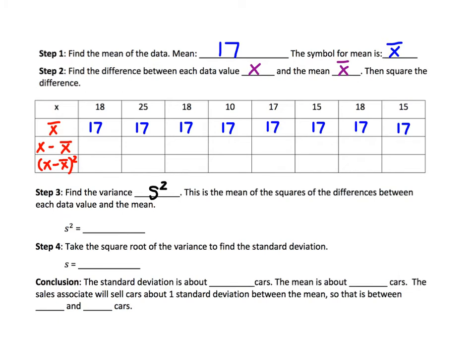Here I have a table showing the number of cars sold by an auto sales associate over an eight-week period. The first thing to calculate is the mean — I added up the eight numbers and divided by 8 to get a mean of 17. Then for each data value x, you subtract the mean: 18 minus 17 is 1, 25 minus 17 is 8, 18 minus 17 is 1, 10 minus 17 is negative 7, and so on. Once you have x minus x-bar, you square each result: 1 squared is 1, 8 squared is 64, 1 squared is 1, and negative 7 squared is 49.